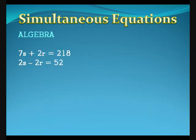Using algebra, we see that 7s plus 2r is 218, and 2s minus 2r is 52.